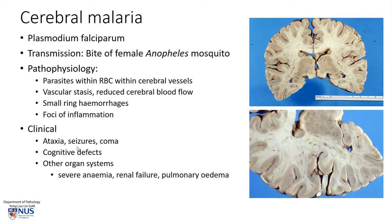Clinically, these patients can present with neurological symptoms such as ataxia, seizures, or even coma, and also cognitive defects. There can also be pathology in other organs, and there can be anemia because of the affected red blood cells, and also renal failure and pulmonary edema.